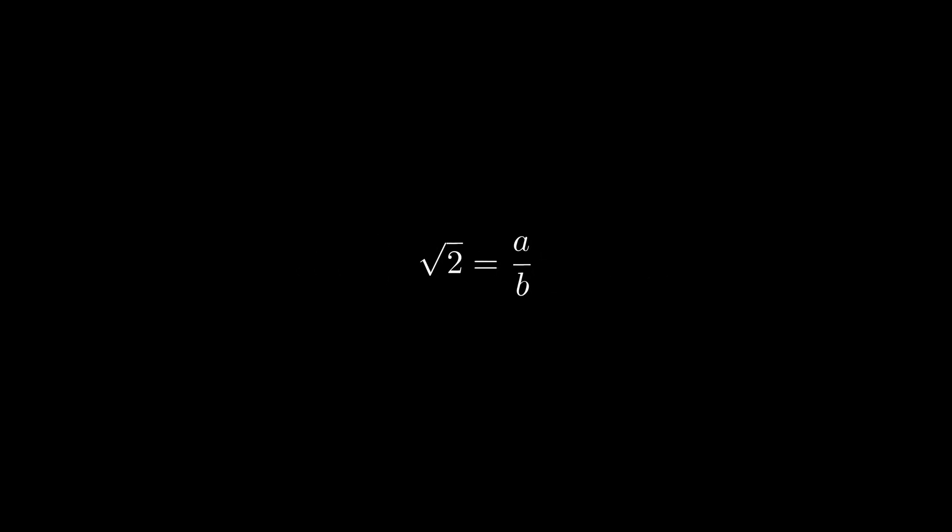Now, because the square root of 2 is equal to a over b, then we can say that b times the square root of 2 equals a. This implies that if we square both sides, the equality is still true. After a little bit of simplifying, we end up with b squared times 2 equals a squared.